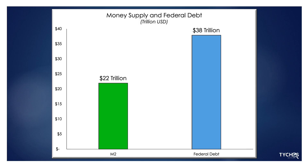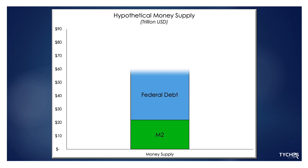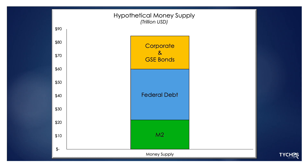But let's just pretend for a moment that government debt is money. Well, then the money supply would be the sum of M2 at $22 trillion plus government debt at $38 trillion, for a total of $60 trillion. And heck, if government bonds are money, why shouldn't Fannie Mae and Fannie Mae mortgage bonds, and even corporate bonds, count as money? If I can buy something with a treasury bond, why couldn't I also buy it with a Fannie Mae bond? If so, that would add another $25 trillion of money, bringing the total to $85 trillion.